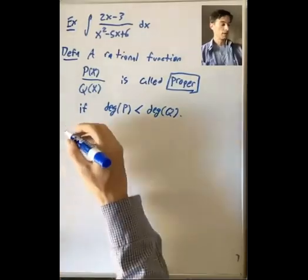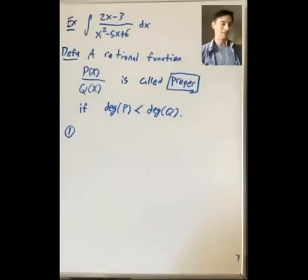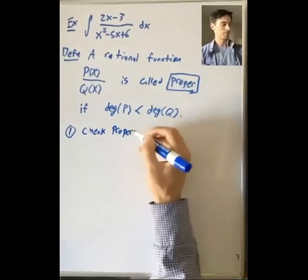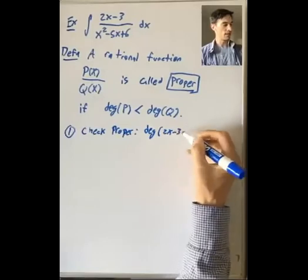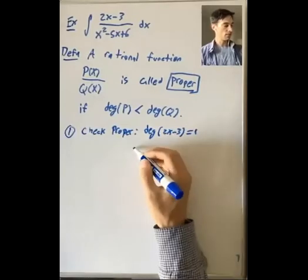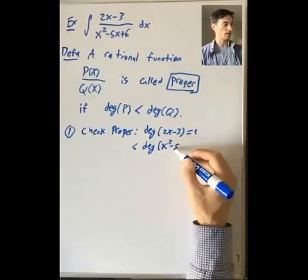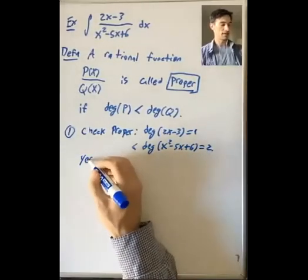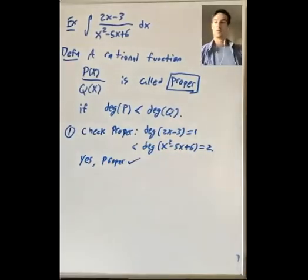So let's look at this example. The first thing to do when integrating a rational function is check if it's proper. The degree of the numerator 2x minus 3 is 1, which is less than the degree of the denominator x squared minus 5x plus 6, which is 2. So yes, it is proper. For now, what we're going to do with that information is just move on.